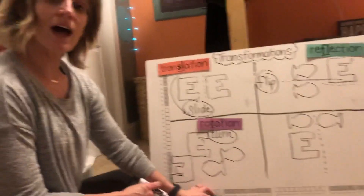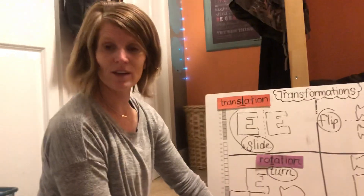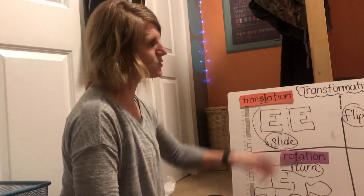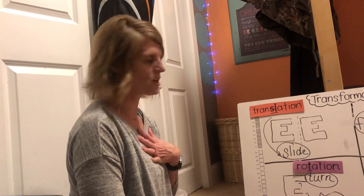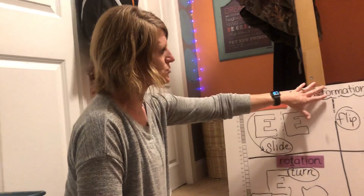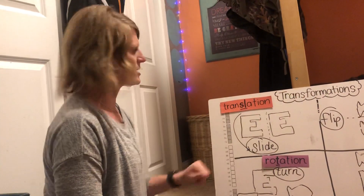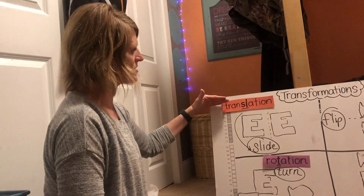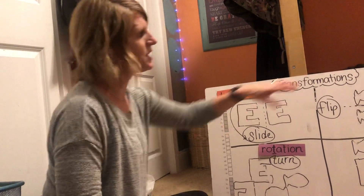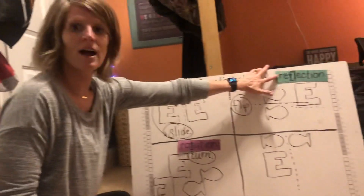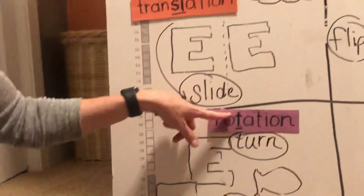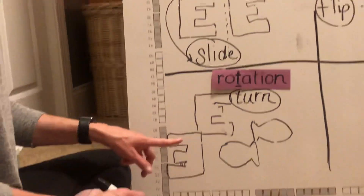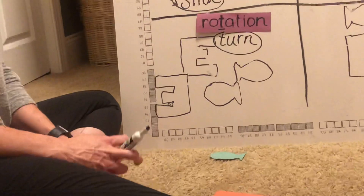What I'm going to have you do today for the assignment is basically the same thing that I did right here. You're going to try these three different transformations: you're going to try a slide or a translation, you're going to try a reflection or a flip, and you're going to try a rotation or a turn. Good luck and have fun.